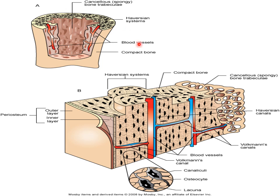Looking at a cross-section diagram: the cancellous or spongy bone is in the center, and compact bone is on the outside. The circular tube visible in the compact bone is the Haversian system, and within it is the Haversian canal where blood and nerve vessels travel. The Volkmann's canals connect Haversian canals perpendicularly. The small dark circles are the canaliculi where osteocytes — the bone cells — reside.